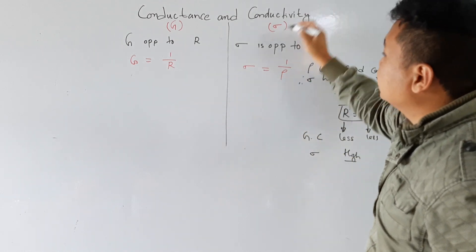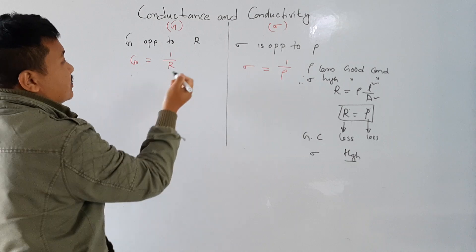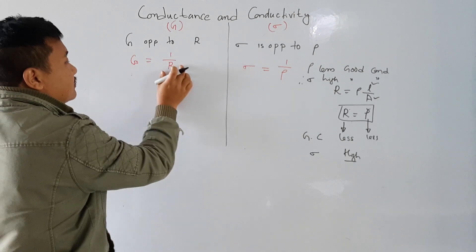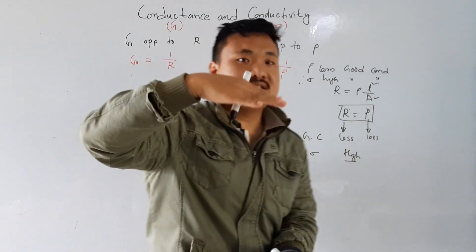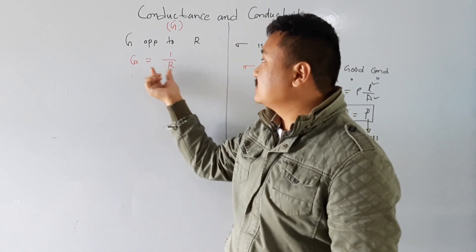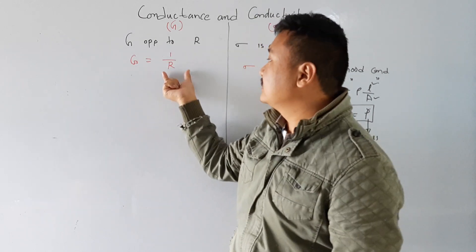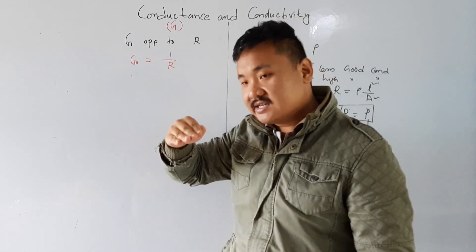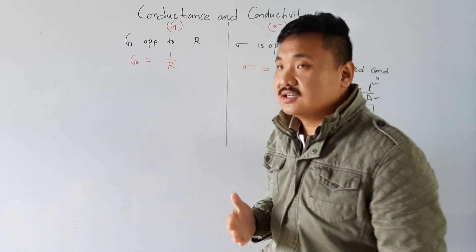For a good conductor, conductivity should be large. Conductance large and resistance less — that is a good conductor. Now, if the resistance is large, then the conductor is a very bad conductor. If resistance is large, then conductance will become less. For a bad conductor, resistance is very high but conductance will be very less, so it will not allow the current to pass easily.